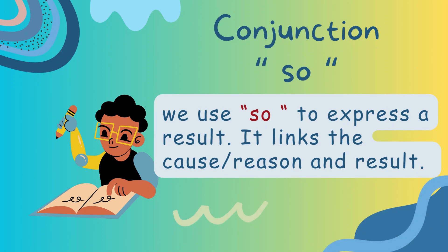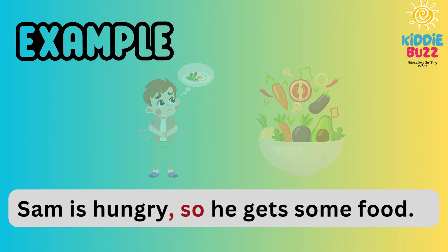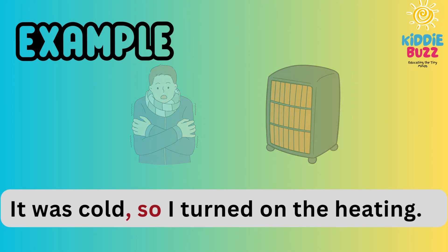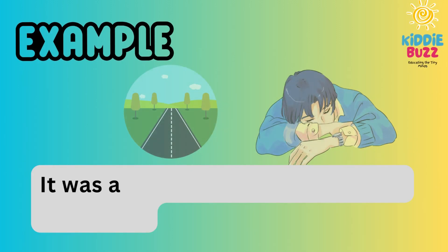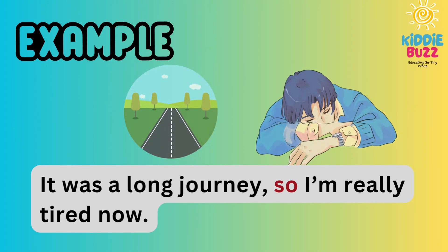Conjunction SO. We use SO to express a result — it links the cause or reason to the result. For example, 'Sam is hungry so he gets some food.' Another example: 'It was cold so I turned on the heating.' The result comes after the conjunction SO. Another example: 'It was a long journey, so I am really tired now.' The result — being tired — follows the conjunction SO.